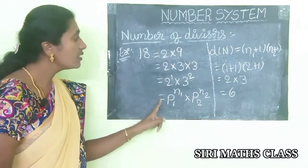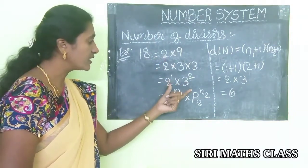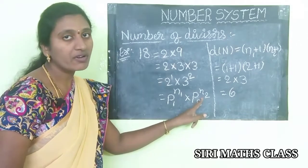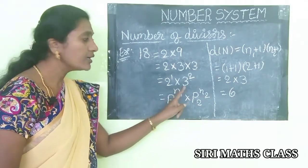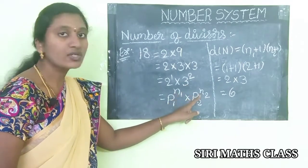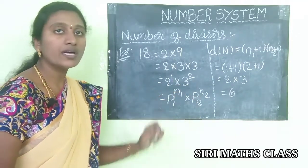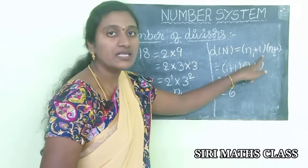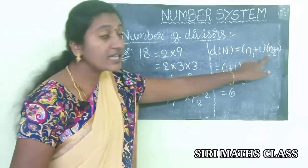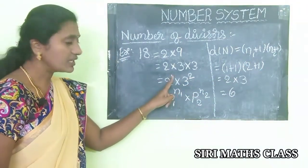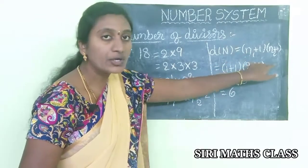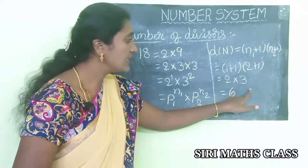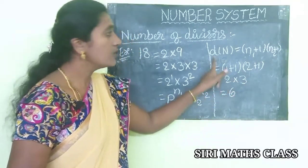The standard form of 18 is 2^1 × 3^2, in the form p1^n1 × p2^n2. The bases p1, p2 are 2 and 3 — prime numbers — and n1, n2 are 1 and 2. Applying the divisors formula d(n) = (n1+1)(n2+1) = (1+1)(2+1) = 2 × 3 = 6. So the number of divisors is 6.